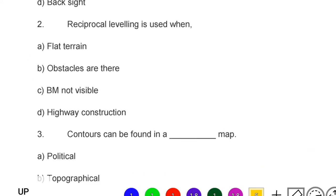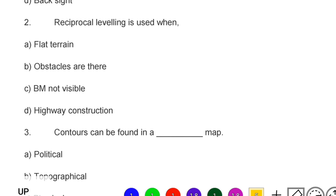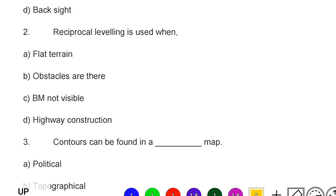Next question: reciprocal leveling is used when — option A: flat terrain, option B: obstacles are there, option C: benchmark not visible, option D: highway construction. The correct answer is option B, obstacles are there.